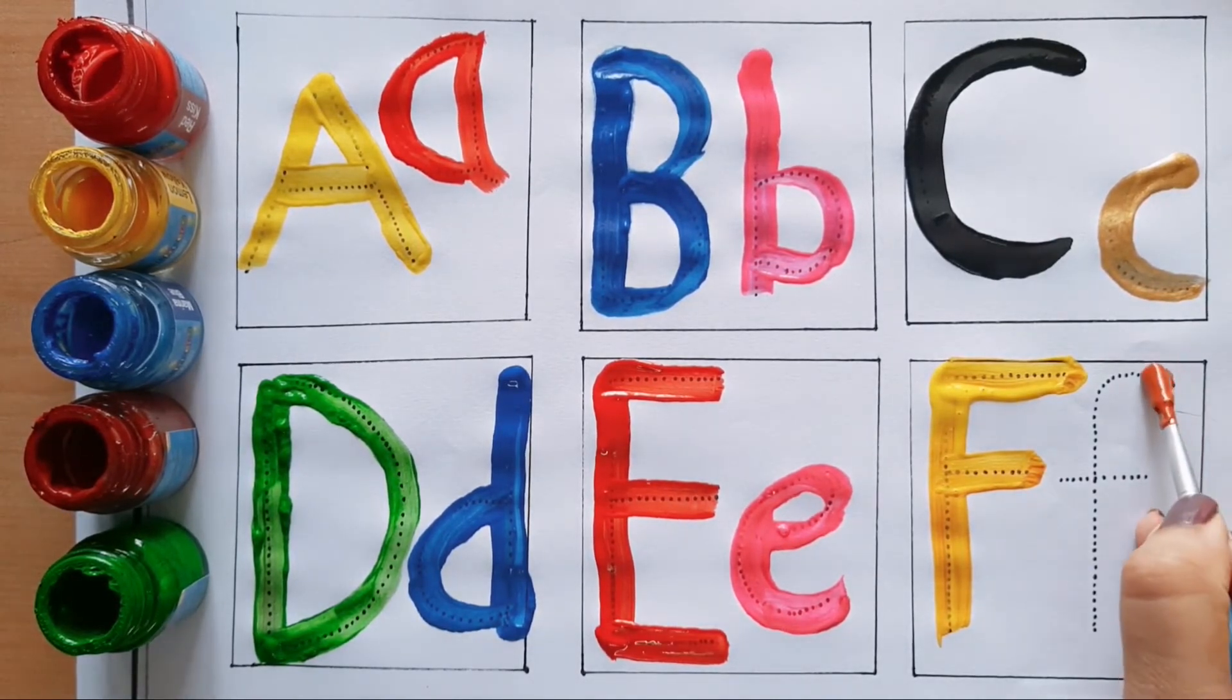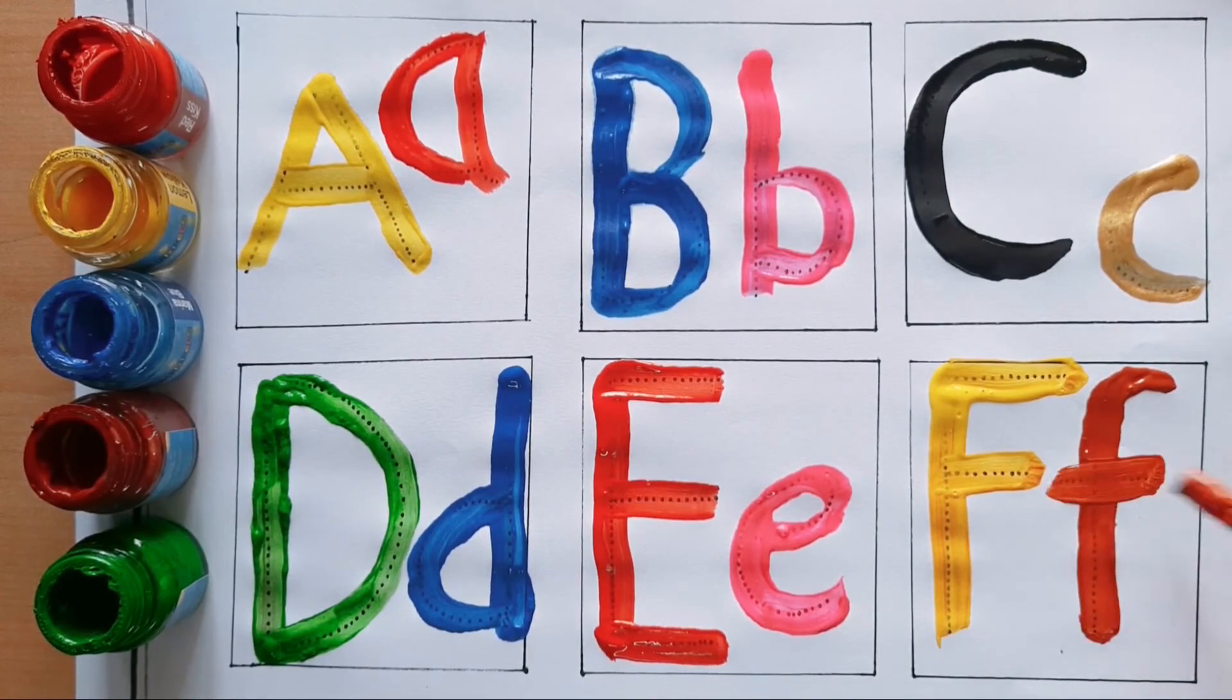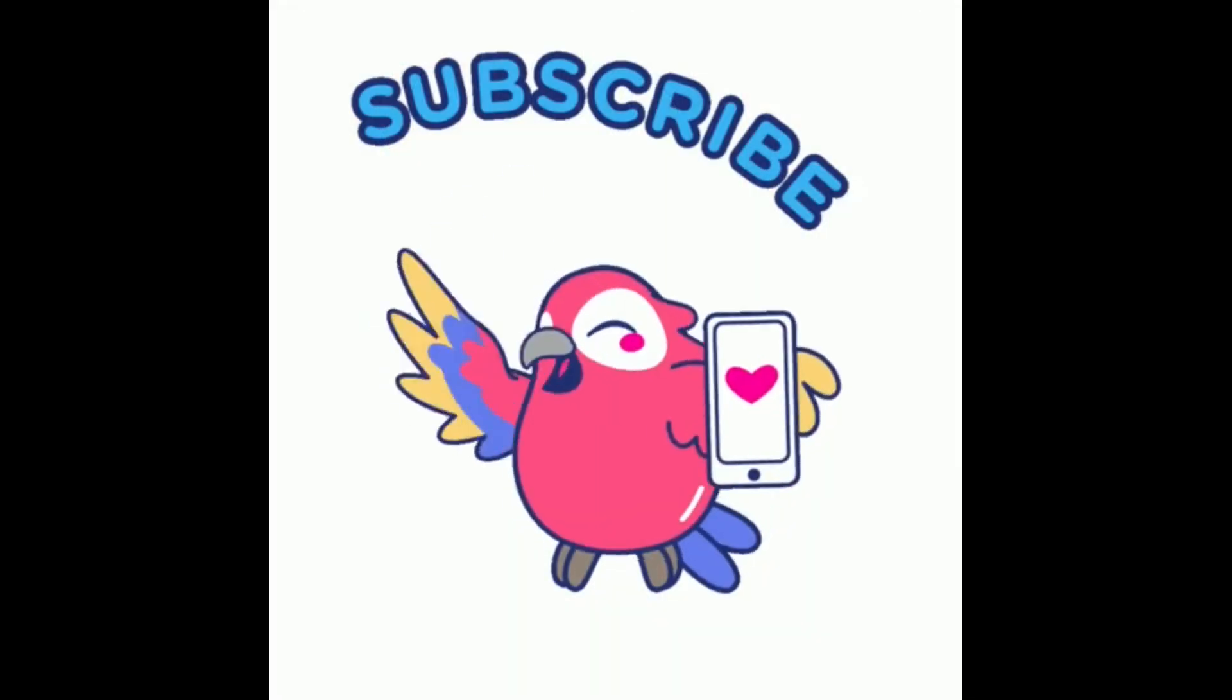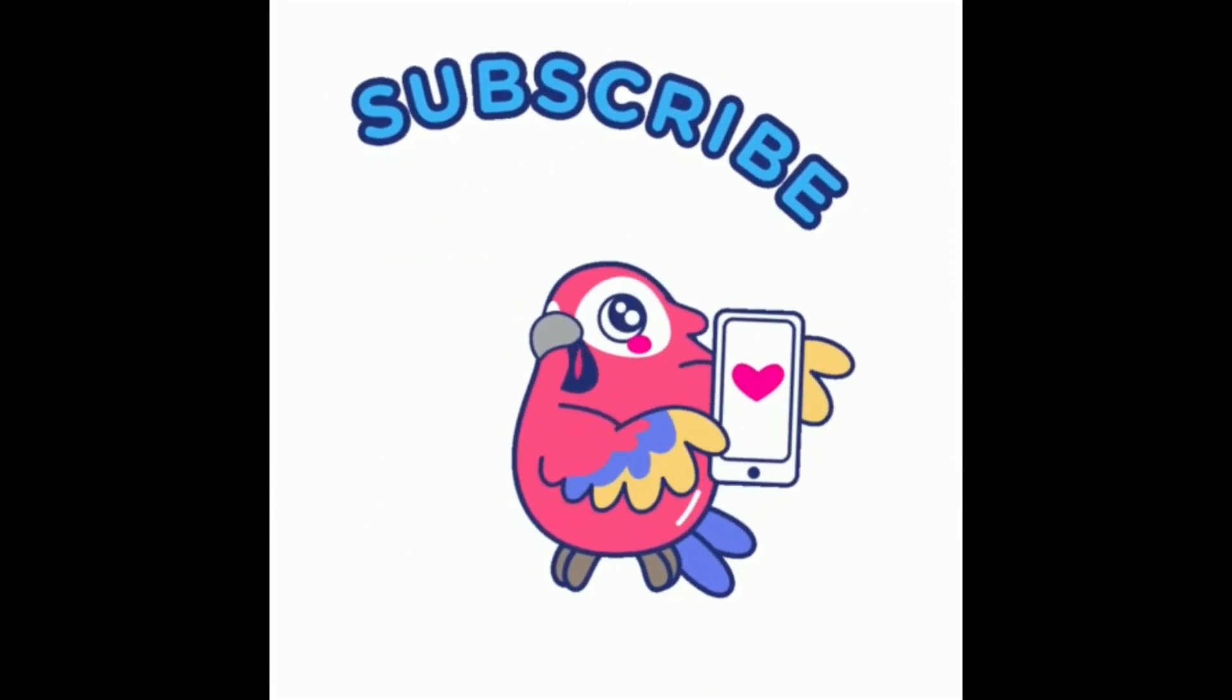Small f, brown color. F for Flag - Flag means Jhanda. Subscribe! Please like my video, share my video. See you next time.